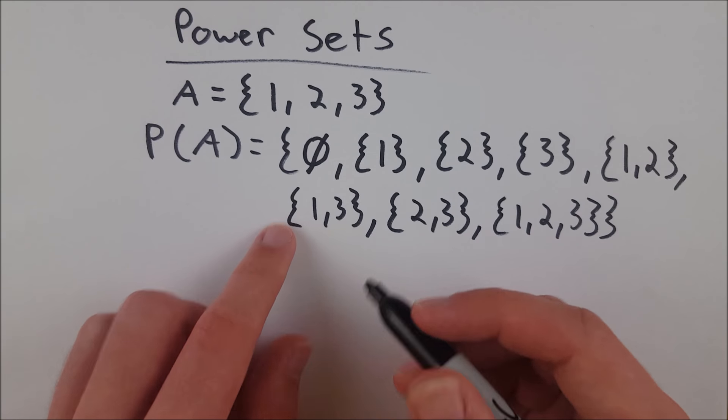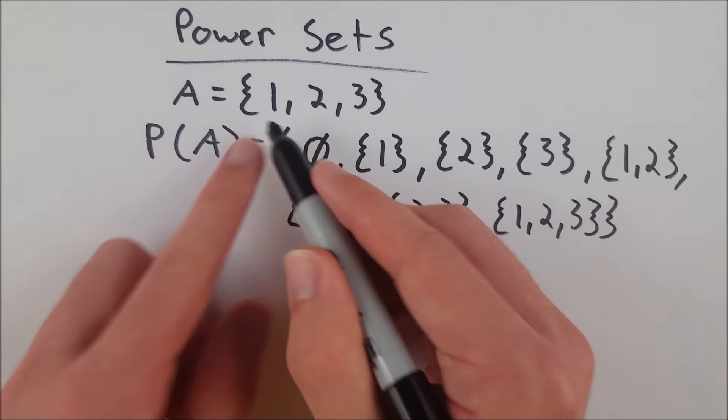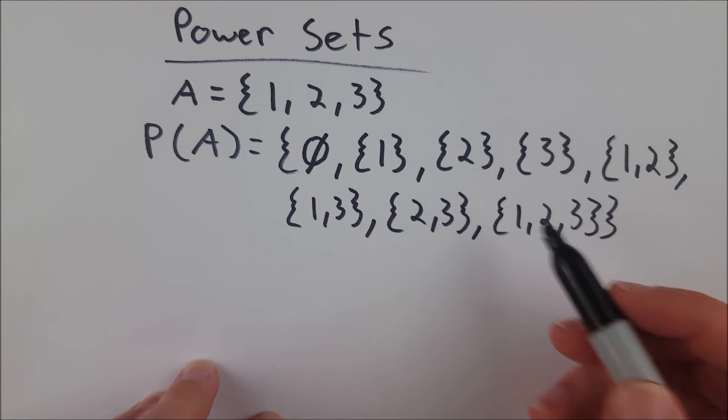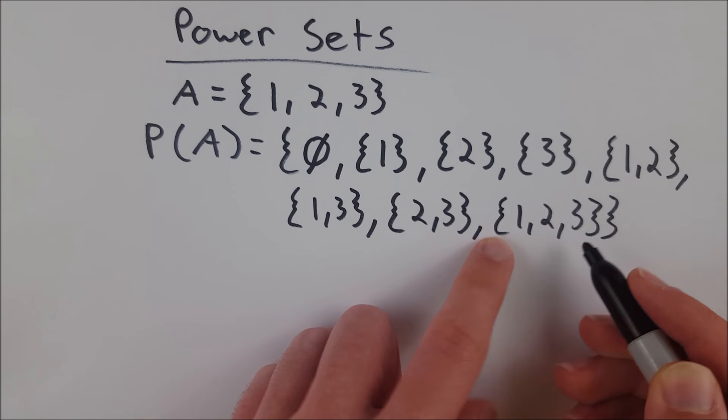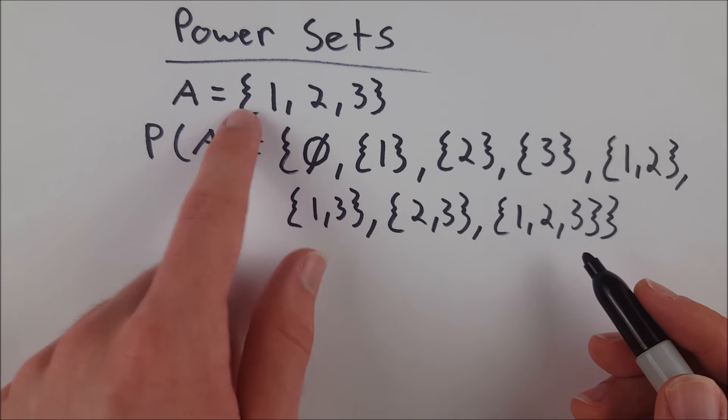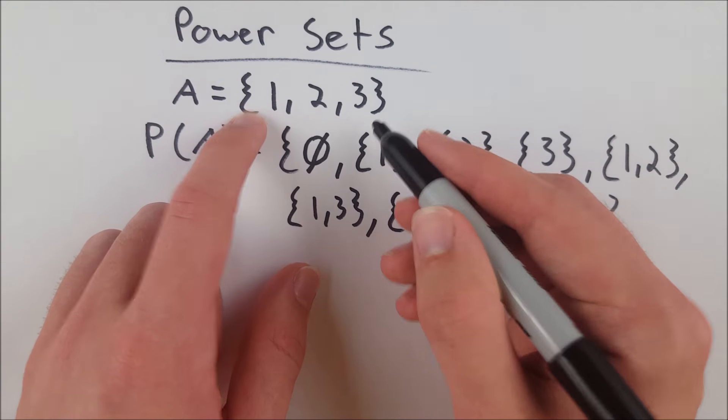Again, rule of a subset is that if a little a is an element of this set, then it must also be an element of this set. That's what makes it a subset, which is why the set itself, we see A is in here as well. That set is also a subset of A because every element in this set is also in this set.